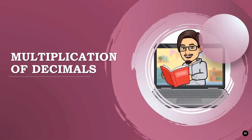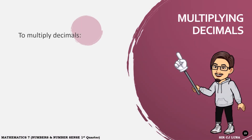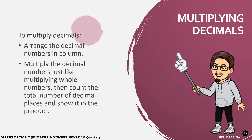This time, I'll teach you how to multiply decimals. To multiply decimals, first arrange the decimal numbers in column. Second, multiply the decimal numbers just like in multiplication of whole numbers. Then count the total number of decimal places and show it in the product.